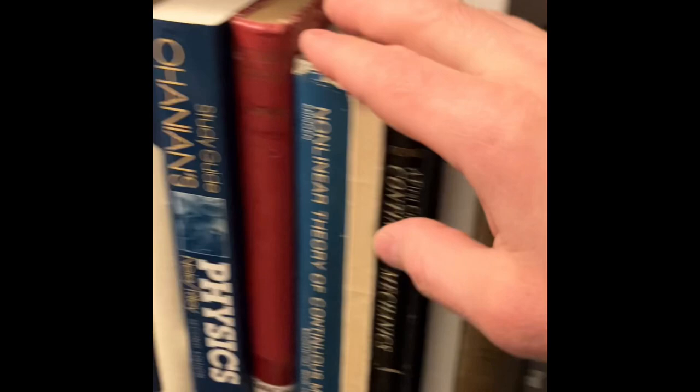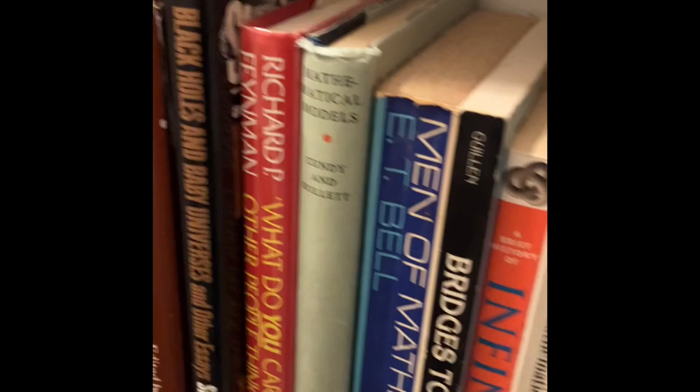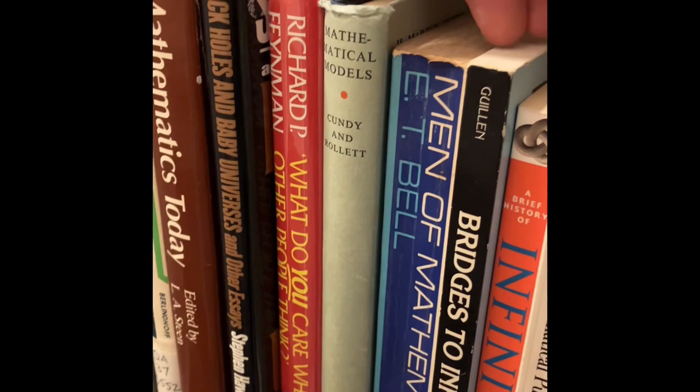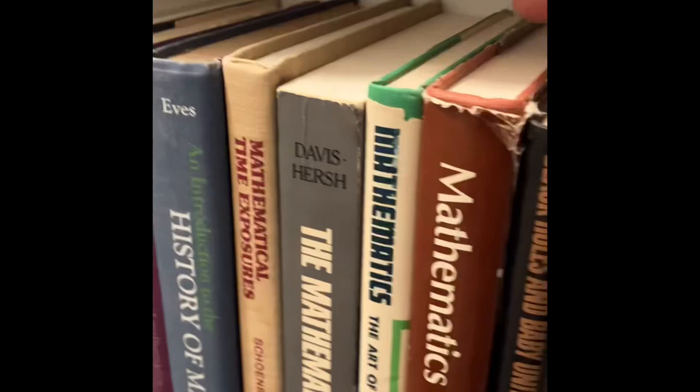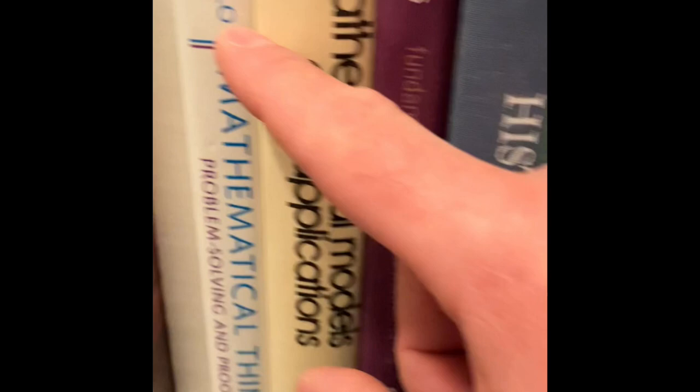And on the other side, we have a little bit about physics down here: classical mechanics down there, a few books about probability. We do have as well, on this side, some of these interesting textbooks about history of mathematics.